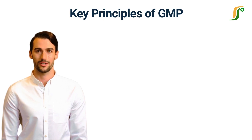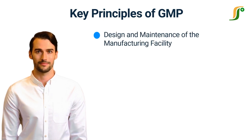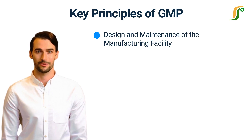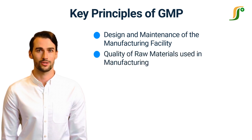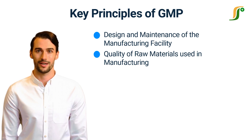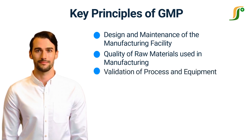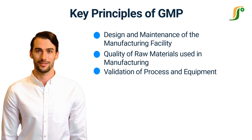Let us understand the key principles of GMP. First is design and maintenance of the manufacturing facility. The manufacturing facility must be designed to prevent and control contamination, mix-up of products, and errors in the process of manufacturing and handling. Second and most important is quality of raw materials used in manufacturing. Raw materials are the key ingredients of pharmaceutical products and must be tested for quality before they are used in production. Third is validation of process and equipment. All manufacturing processes and equipment must be validated to ensure consistent results in all batches.